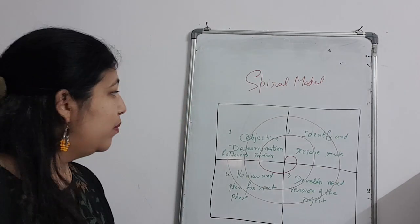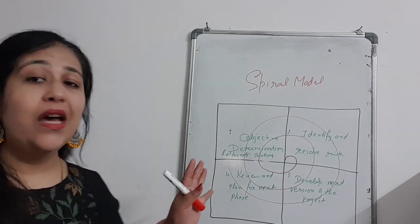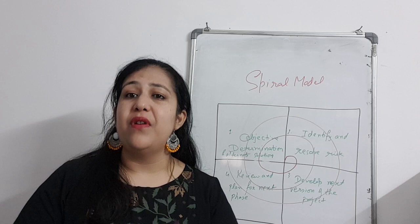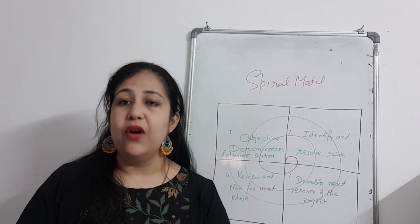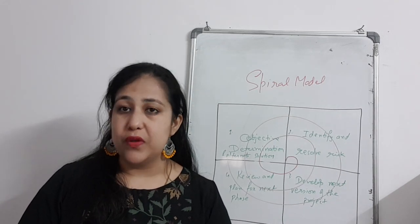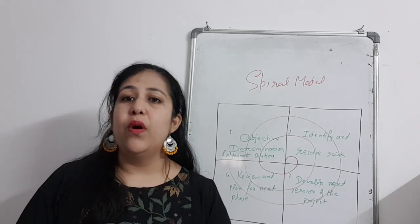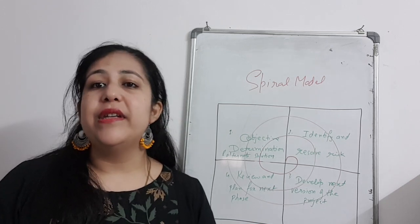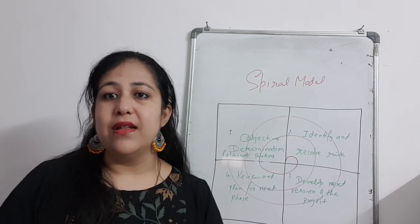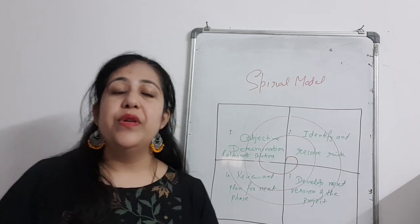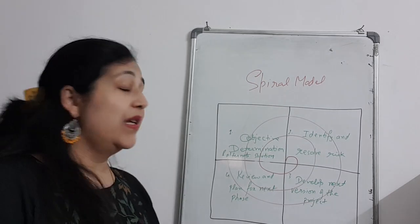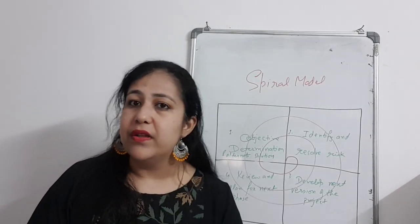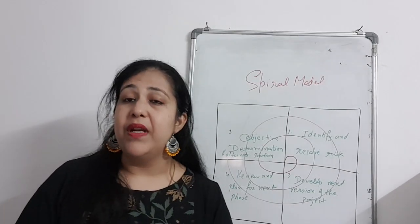The spiral model is basically used in environments where we want to reduce the risk of failure of the software. We want the software to be properly developed and successfully installed and used. The spiral model minimizes the risk involved in software development.